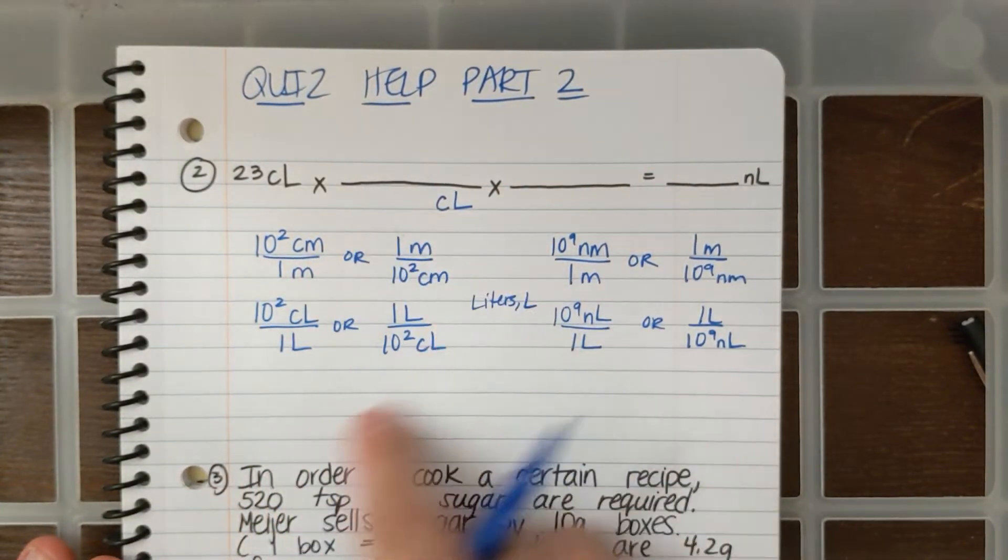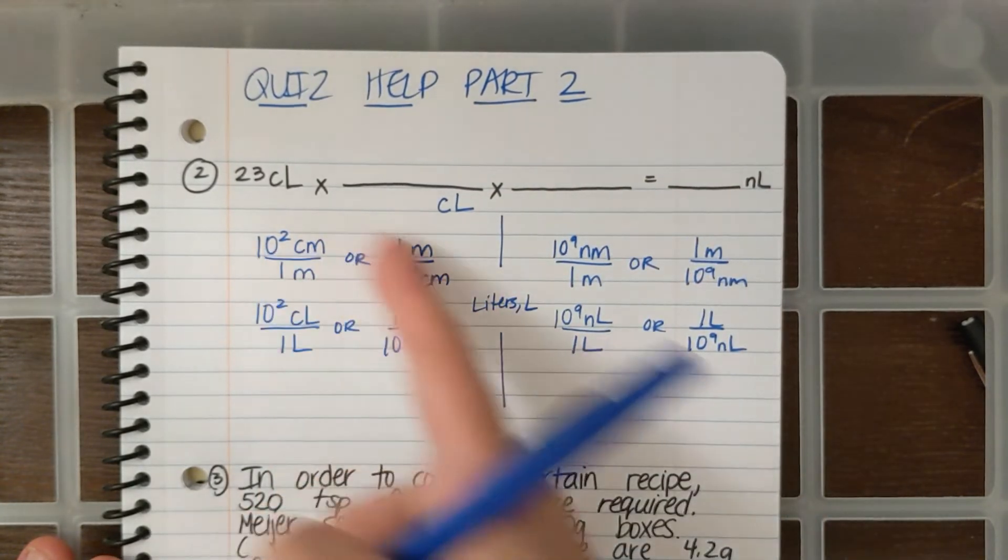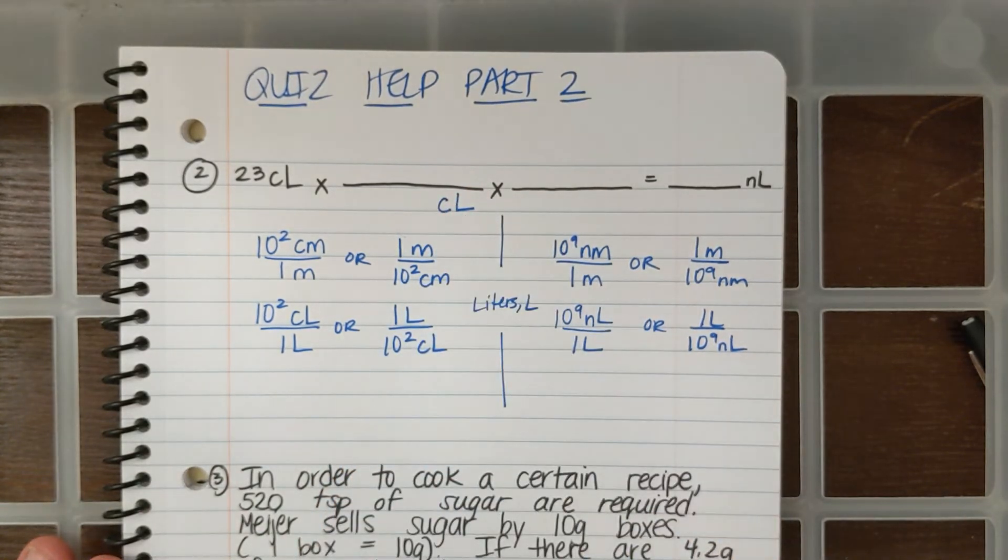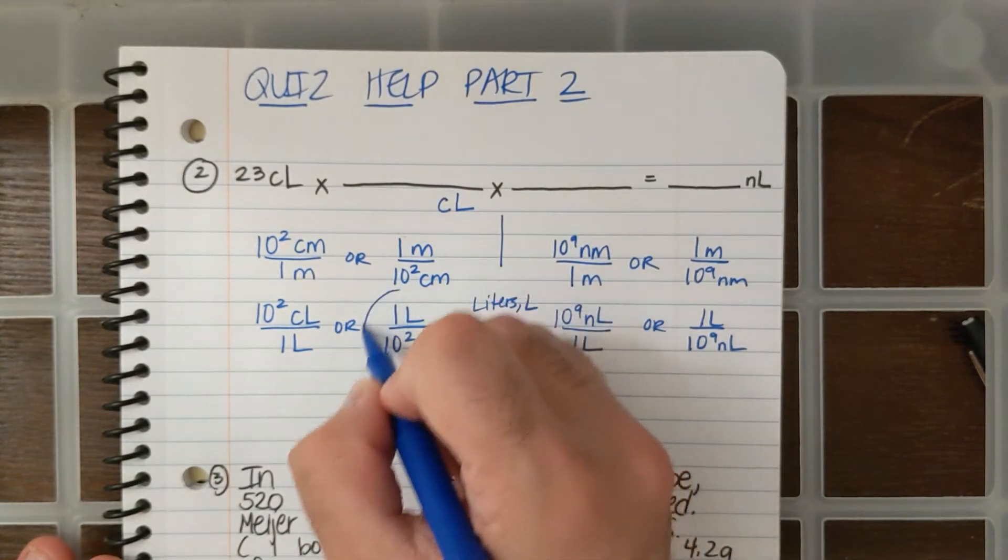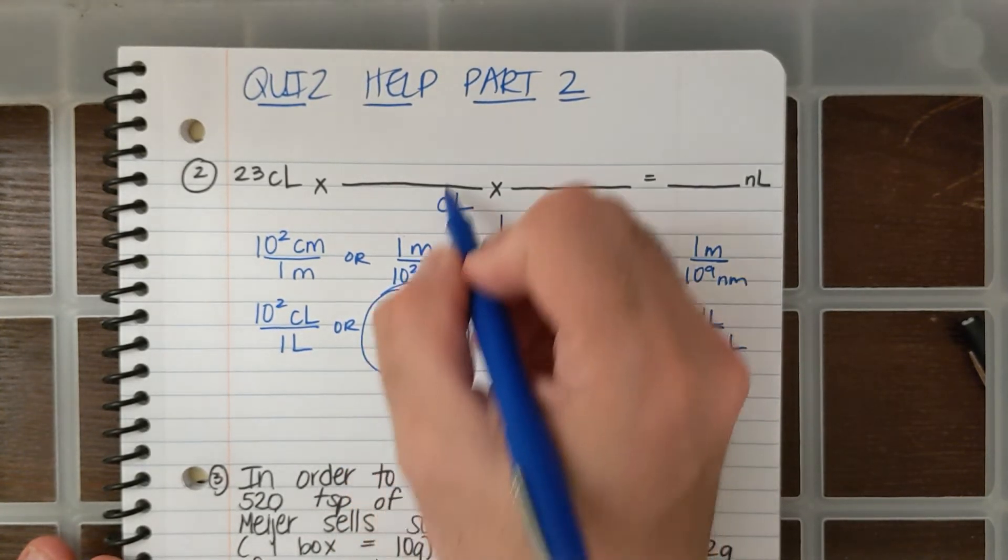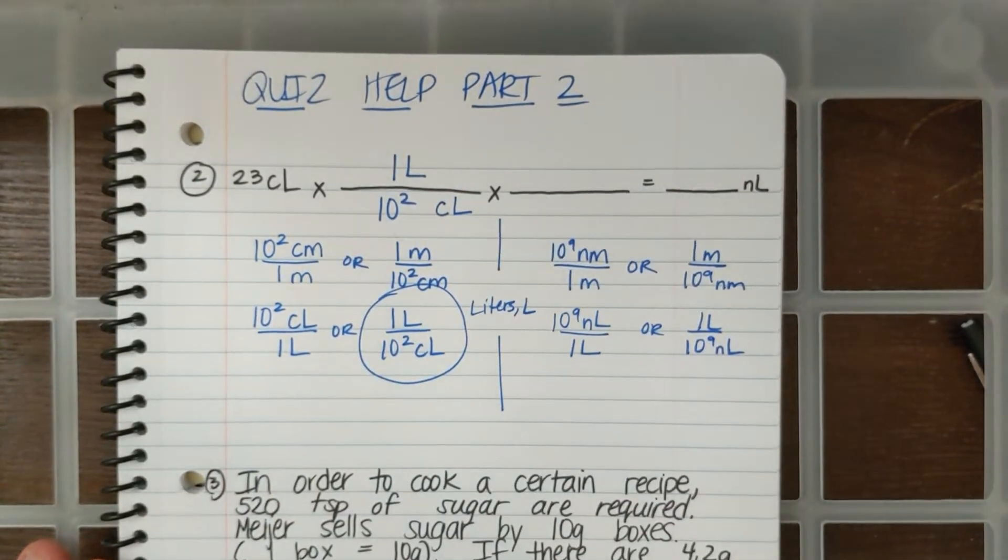Now, which of these conversion factors for centiliters am I going to use that has centiliters in the bottom? Well, it's this one. This has 10 to the second CLs on the bottom and 1 L on top. So let me put 1 L and 10 to the second CL.